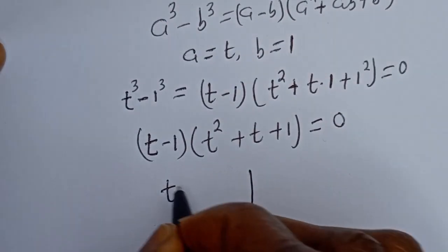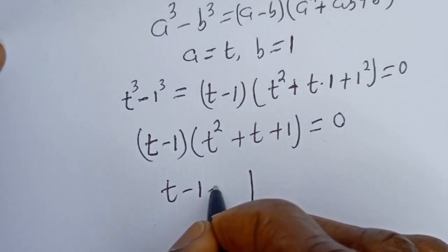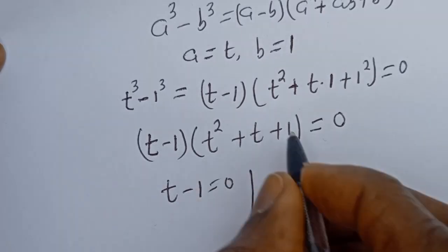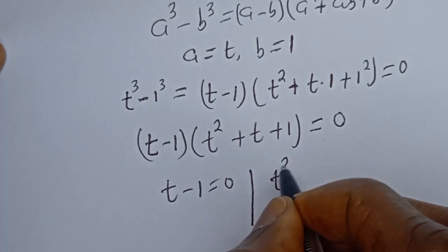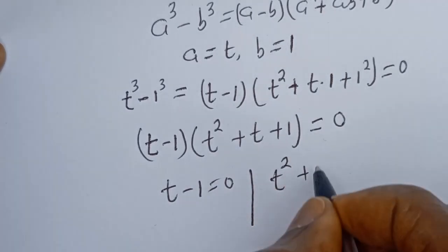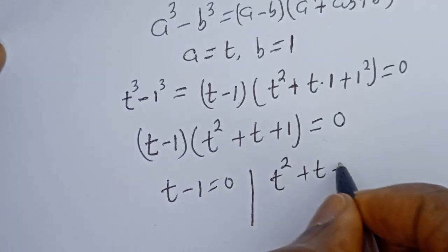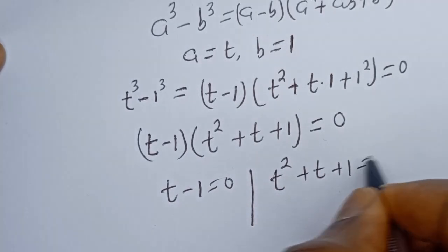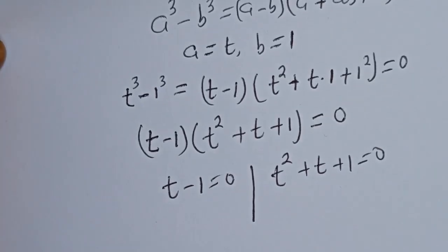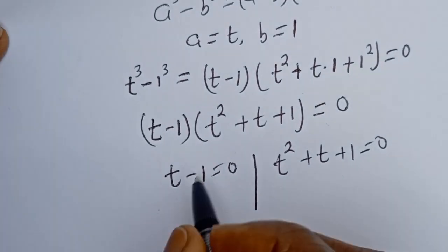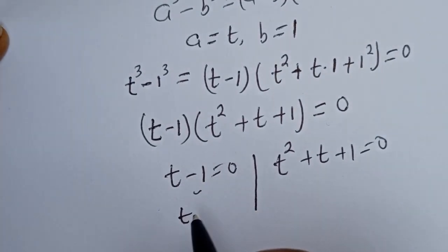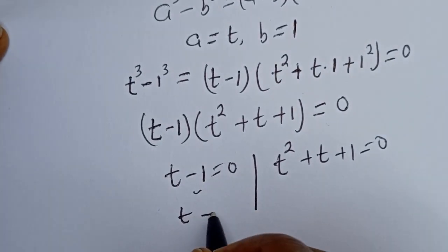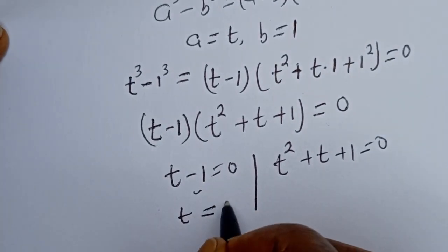There are two cases. The first case is t minus 1 = 0, and the second case is t² + t + 1 = 0. From the first case, t is equal to 1.